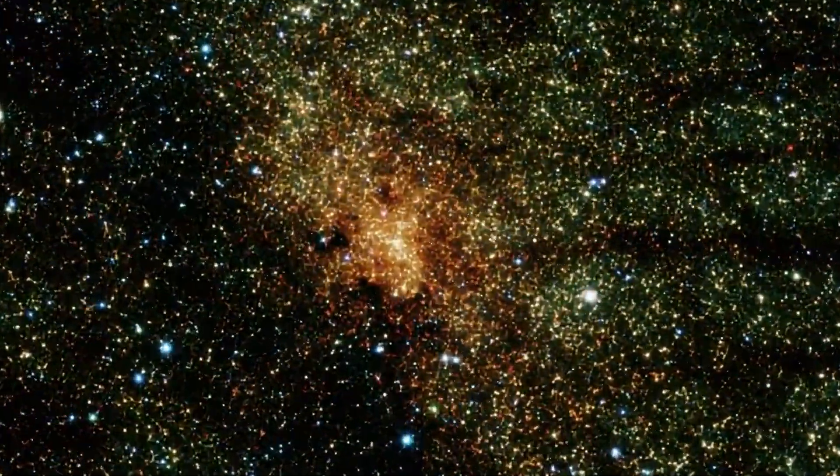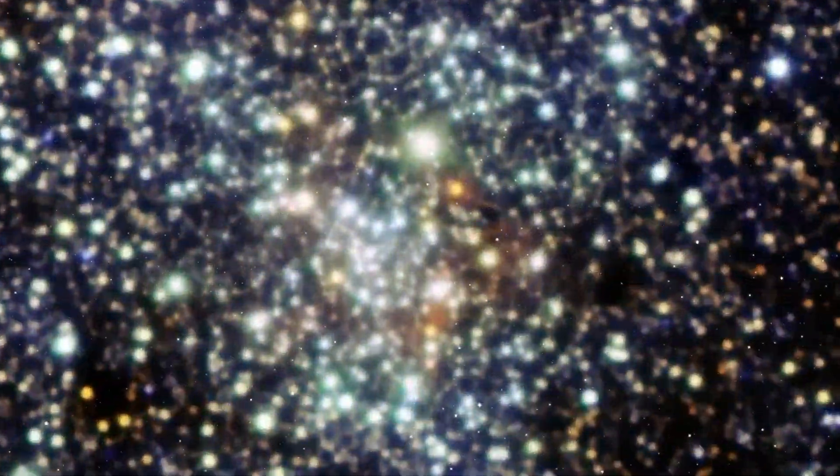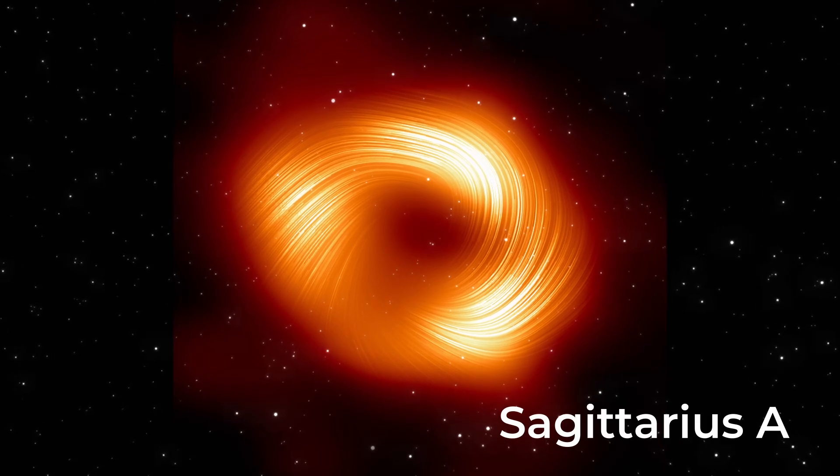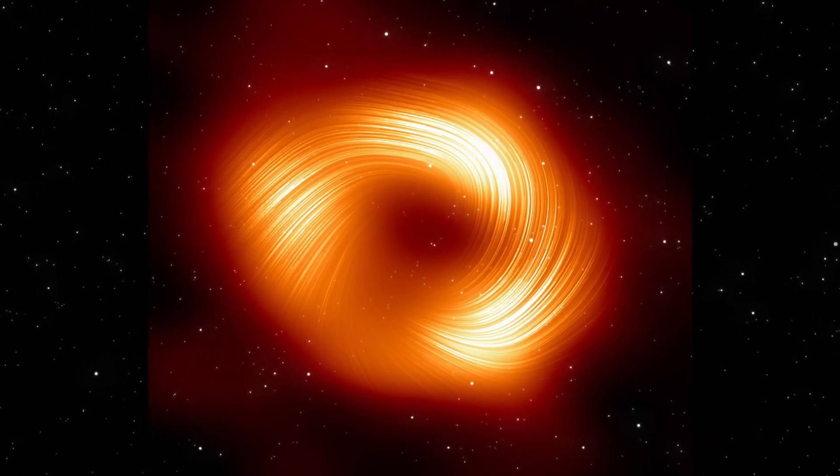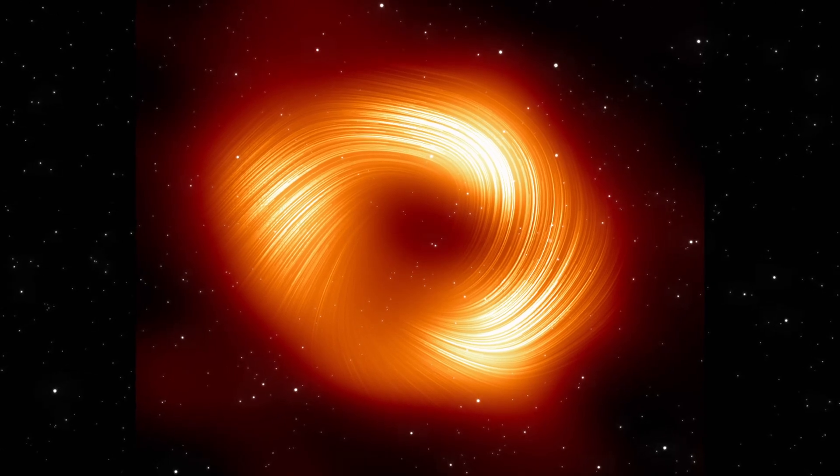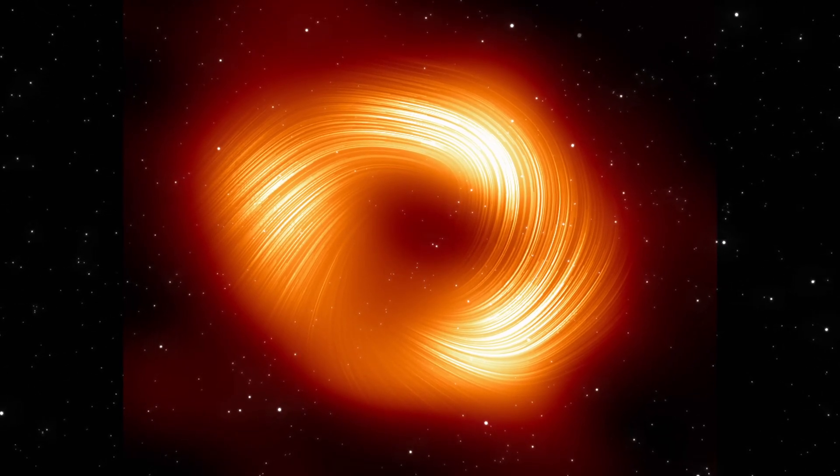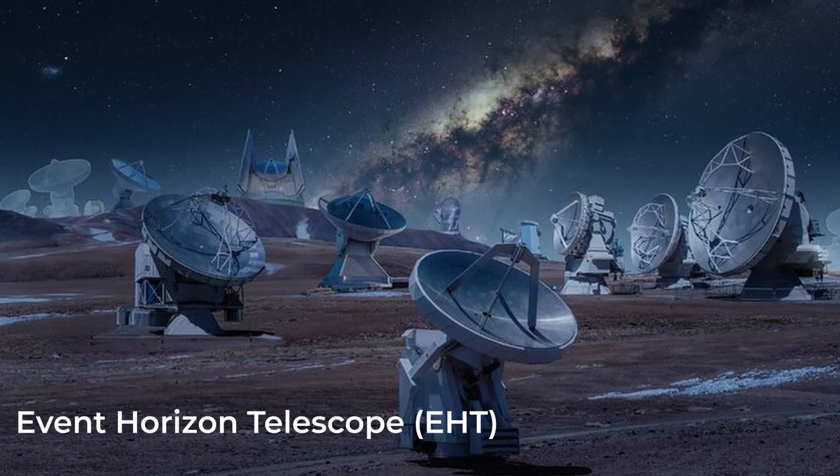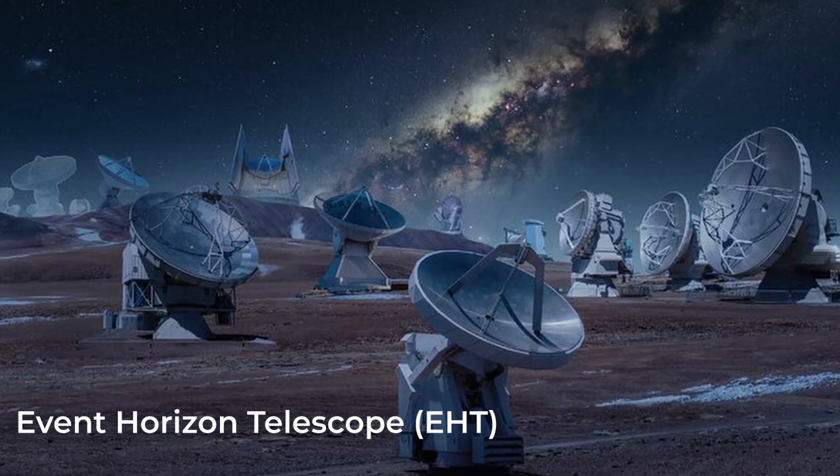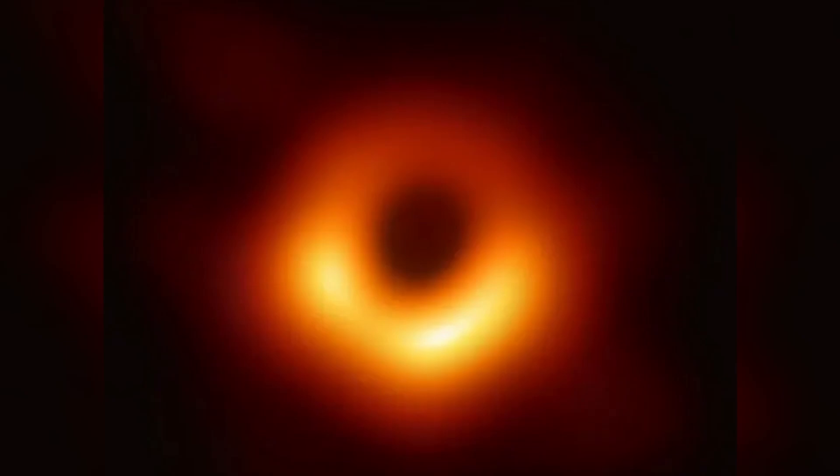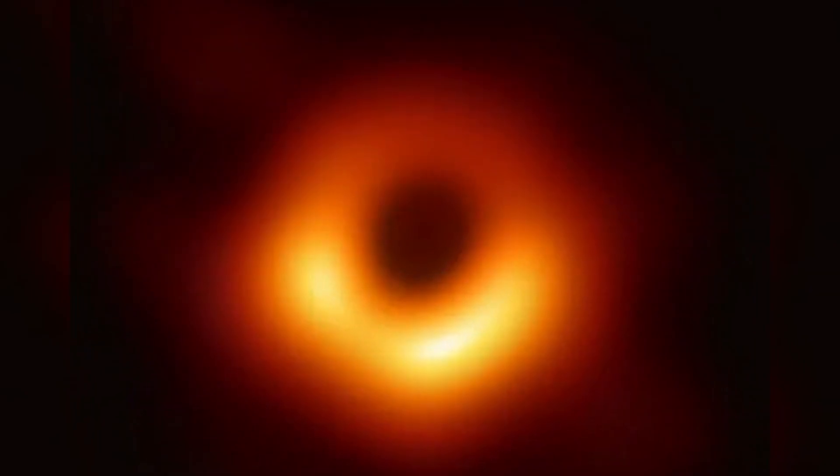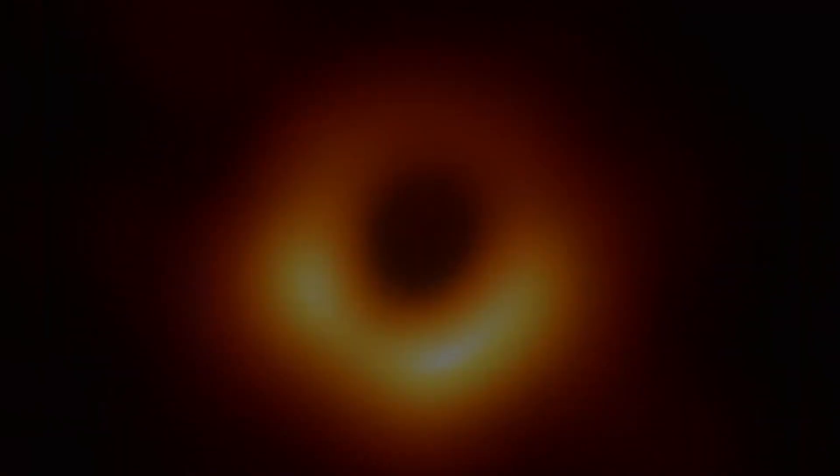At the center of our galaxy lies a supermassive black hole known as Sagittarius A. This immense structure has a mass about 4 million times that of the sun, and is situated roughly 26,000 light years from Earth. In 2019, the Event Horizon Telescope collaboration captured the first ever image of a black hole. This remarkable photograph of the black hole at the center of the M87 galaxy, located 55 million light years from Earth, captivated scientists worldwide.